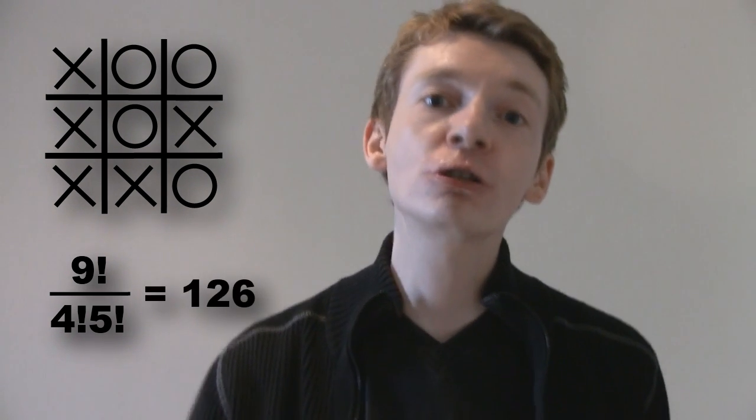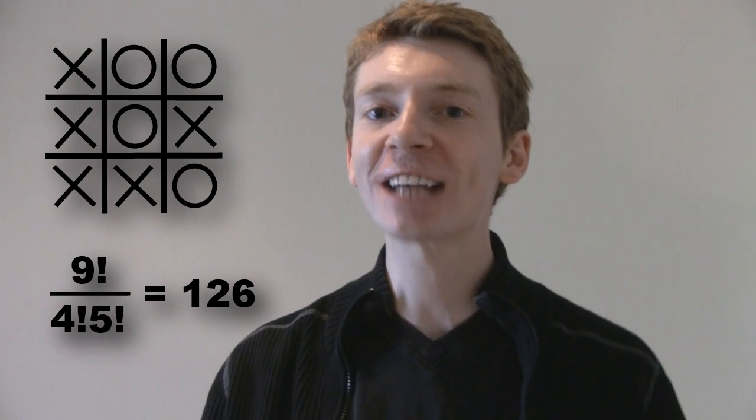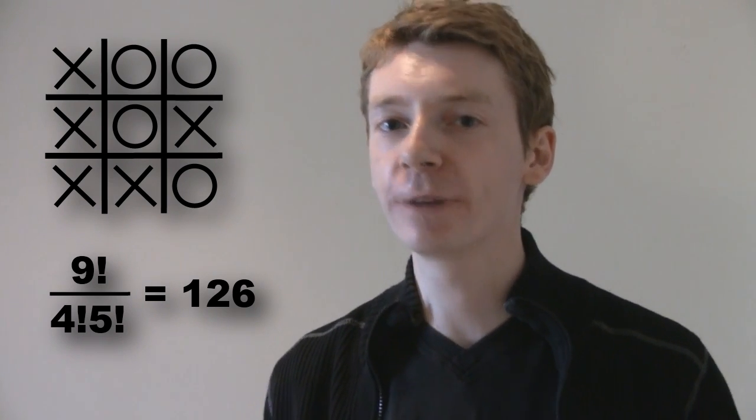However, we have over-counted here. We can interchange the noughts without changing the grid, and there are four factorial ways to swap those four noughts around, so we divide by four factorial. We can also interchange the five crosses, and there are five factorial ways to do that, so we divide by five factorial as well. That gives us 126 grids — but that does include rotations and reflections, so we need to reduce that number further.